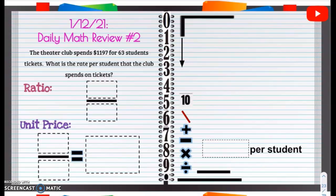January 12, 2021 Daily Math Review number two. The theater club spends $1,197 for 63 students' tickets. What is the rate per student that the club spends on tickets? First of all, we see here $1,197 for 63 tickets for the students.